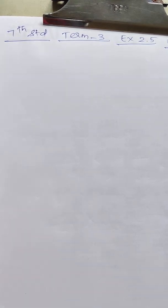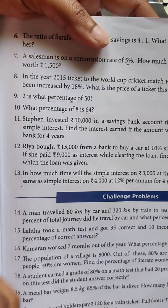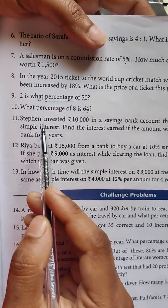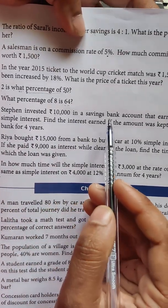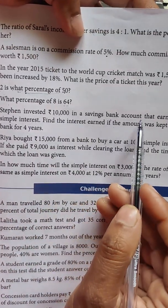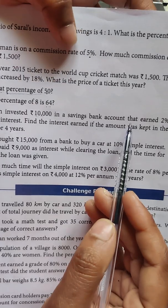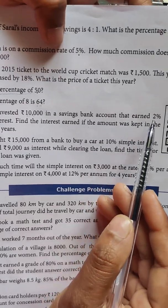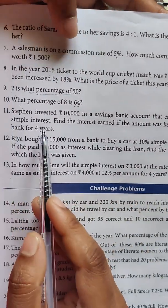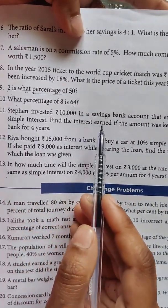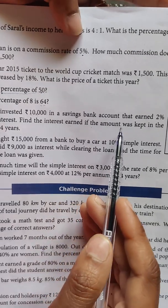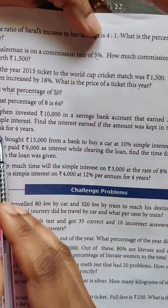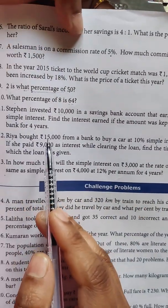Now we will talk about the 11th sum. Stephen invested Rs. 10,000 in a savings bank account that earned 2% simple interest. Find the interest earned if the amount was kept in the bank for 4 years.